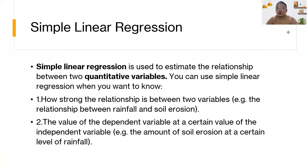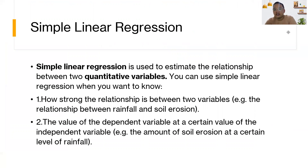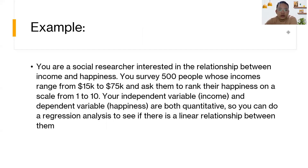Now, let's move on to simple linear regression. What is the use of simple linear regression? It is used to estimate the relationship between two quantitative variables. You can use simple linear regression when you want to know how strong the relationship is between two variables — for example, the relationship between rainfall and soil erosion — or the value of the dependent variable at a certain value of the independent variable, for example, soil erosion at a certain level of rainfall. For example, you are a social researcher interested in the relationship between income and happiness. You survey 500 people whose income ranges from $15,000 to $75,000 and ask them to rank their happiness on a scale from 1 to 10.